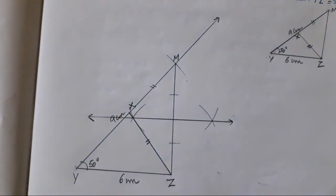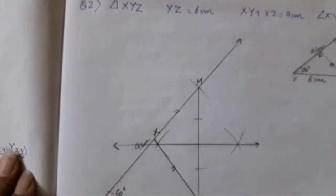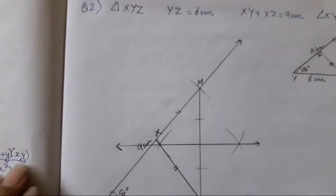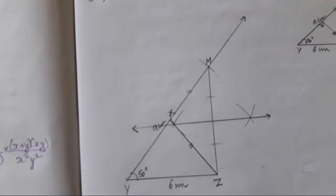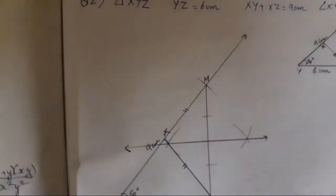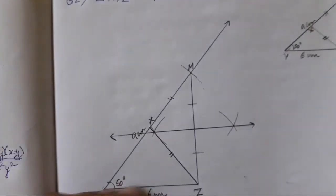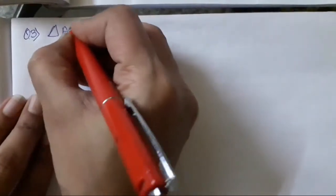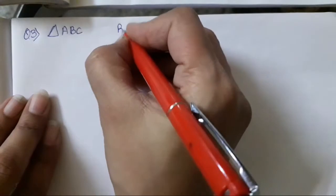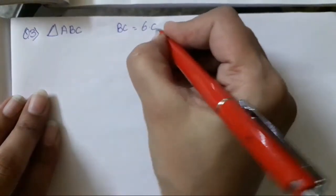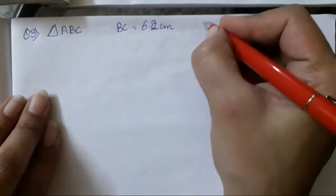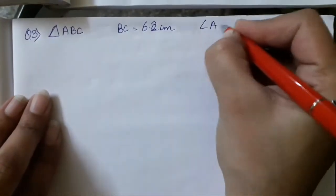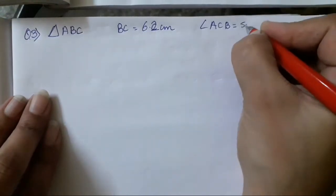I hope you all have understood — this is very easy. You don't have to get confused for this construction. If there is any query, please let me know in the comment section. Let's move on to the third question. Question number 3: we need to construct triangle ABC in which BC is equal to 6.2 cm.